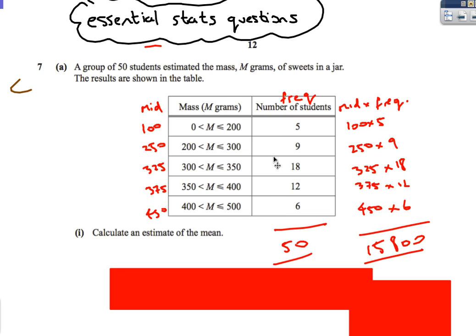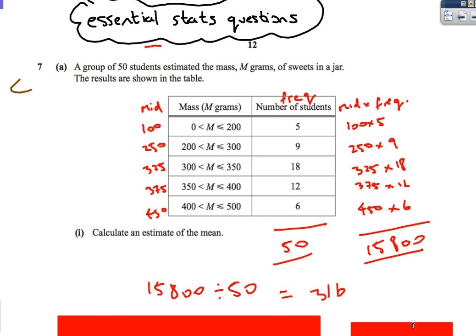Add the total frequencies together, which is 50. Don't make the mistake of just counting how many rows — we have 5 rows, but we don't divide by 5. We divide by the total number of students: 15,800 divided by 50 equals 316. This is worth 4 marks, as long as you write down each step: 1 mark for the midpoints, 1 for midpoint times frequency, 1 for dividing by 50, and 1 for the final answer.